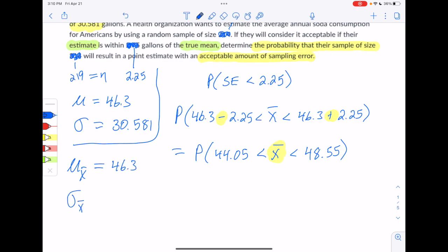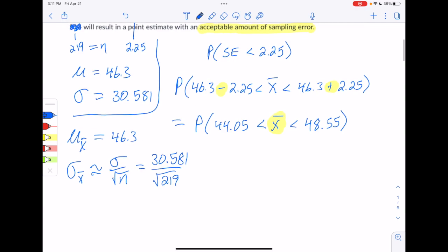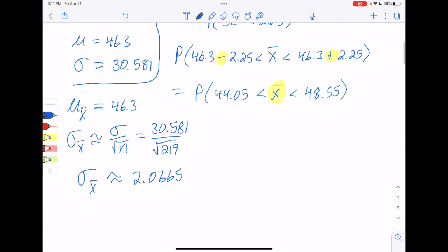And sigma of x bar is approximated by sigma over the square root of n, which in this case would be 30.581 divided by the square root of our sample size, which is 219. So sigma of x bar ends up being 2.0665. You do want to make sure you use five significant figures on your sigma x bar to make sure that you can get z scores that are reliable. The other thing you need to know is the distribution of x bar. And because n is 219, which is greater than or equal to 30, that implies that x bar is going to be normal.